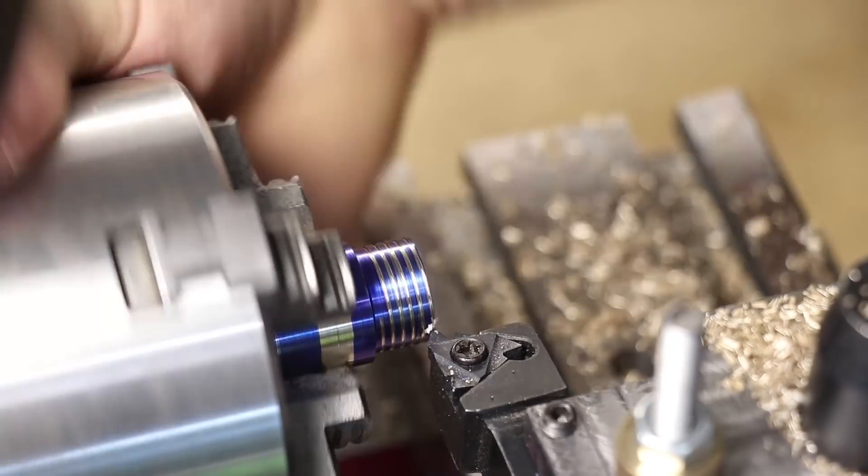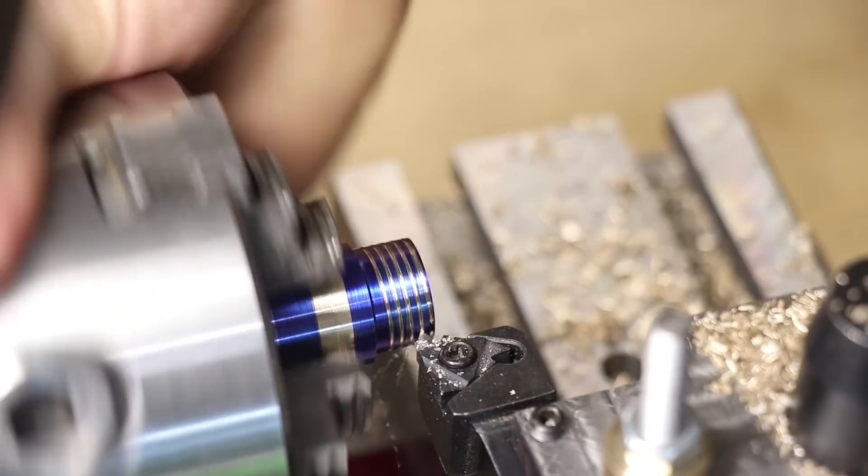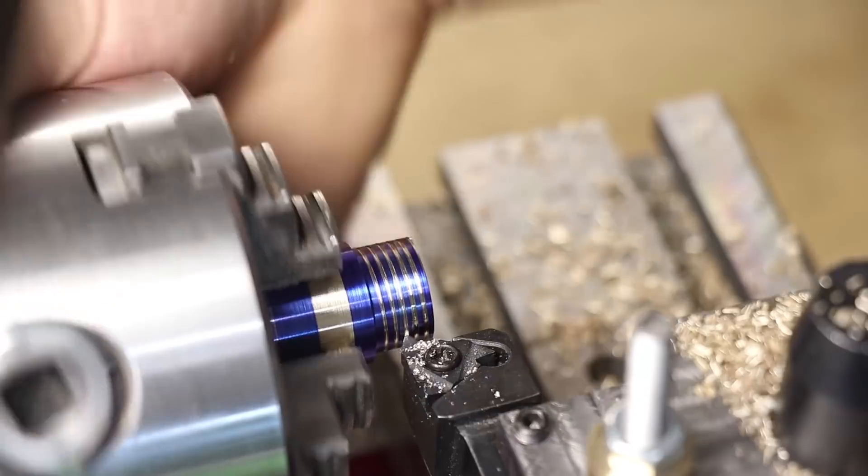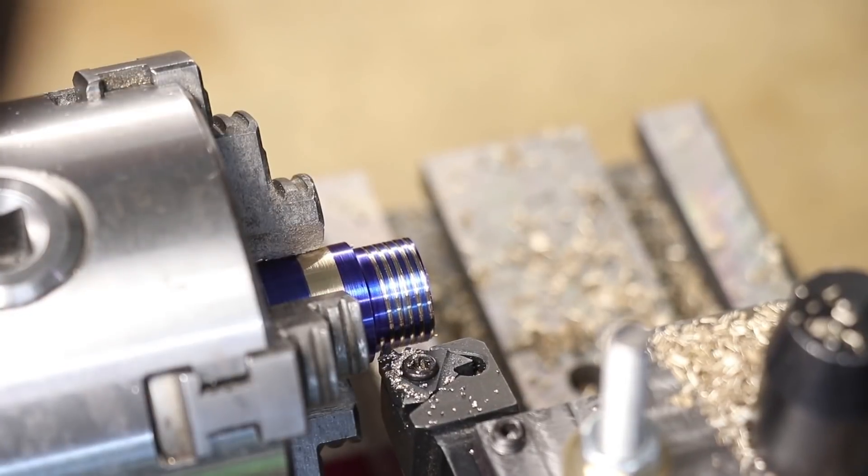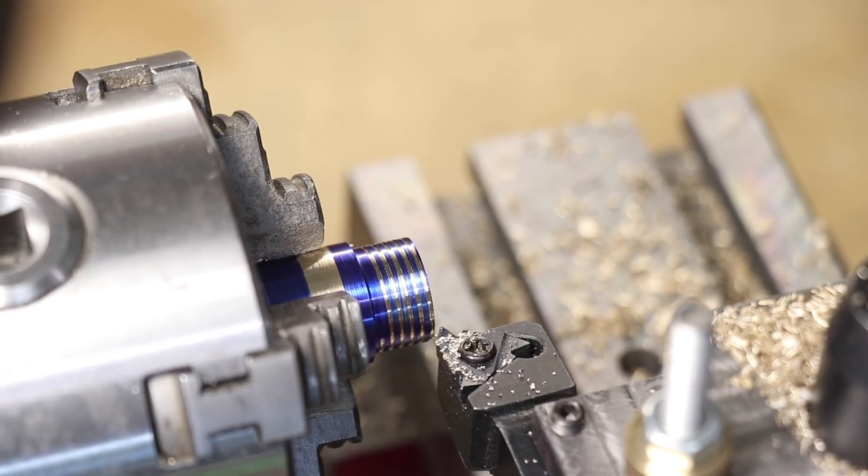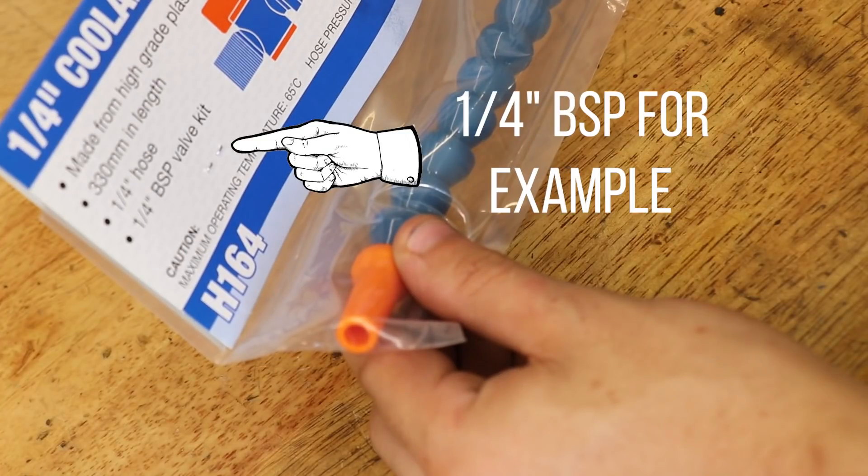But for the most part, if I need a one-off thread, I'm going to use the lathe. And that's the reason for this video. I have a few imperial threads that I need cut, and instead of buying a tap and die set, I thought I'd use the lathe. There's no point in me spending 75 bucks on a bunch of taps and dies that I'll only use once or twice.